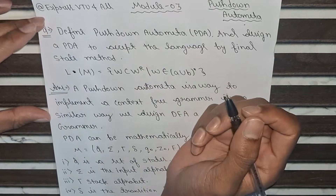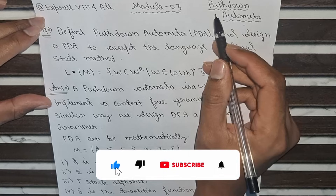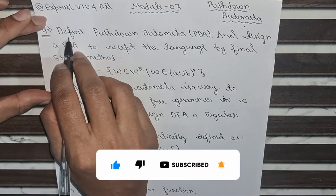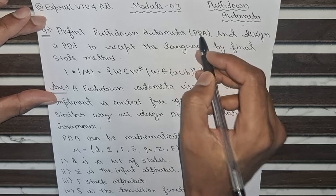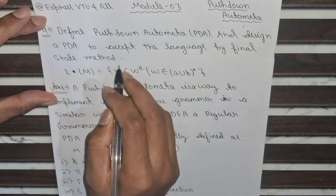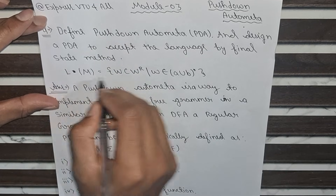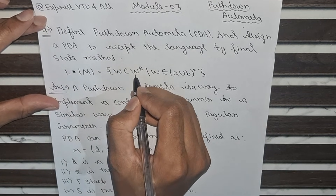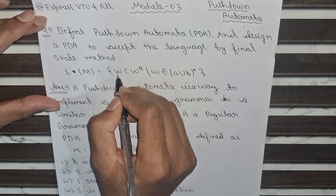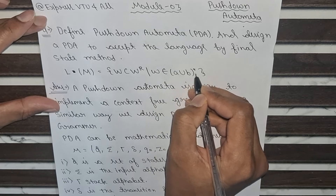Hello everyone, welcome back to Express Video for All. Today we are going to solve a very important question from Module 3: Pushdown Automata. In this question we have to define pushdown automata PDA and design a PDA to accept the language by final state method. The language given is L(M) = {WcW^R} where W^R is the reverse of W, and W belongs to (A union B) star.